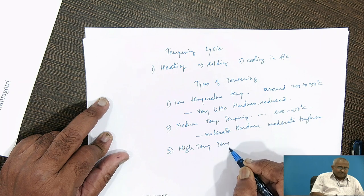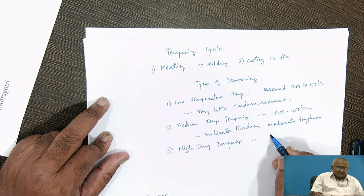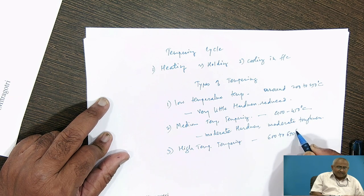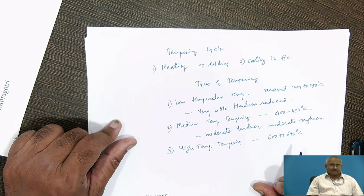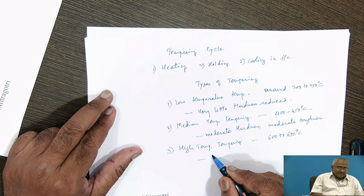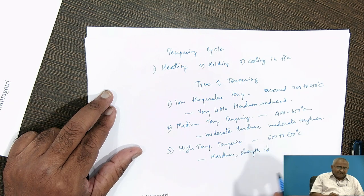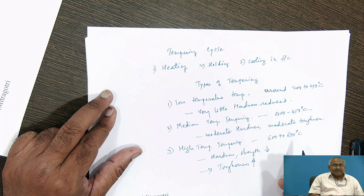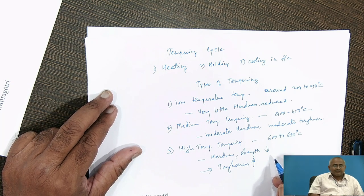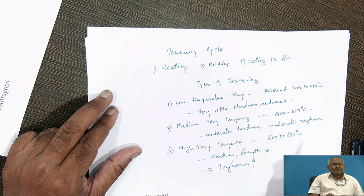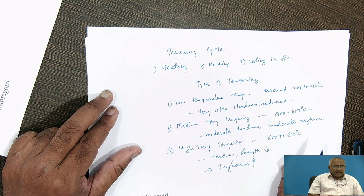The third type is high temperature tempering. In high temperature tempering, we generally heat the hardened steel in the temperature range of 600 to 650 degrees Celsius. In this case, hardness and strength are considerably reduced, while toughness reaches its highest level. When we require very high toughness with considerable strength and hardness, along with the best possible fatigue limit, one should go for high temperature tempering after hardening treatment.